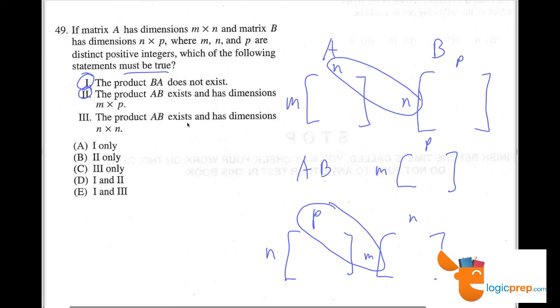The product AB exists and has dimensions n by n. That's not true. As we mentioned, when we multiply matrices, the outside dimensions will be in the product. So that's not true. So the answer is going to be D, one and two.